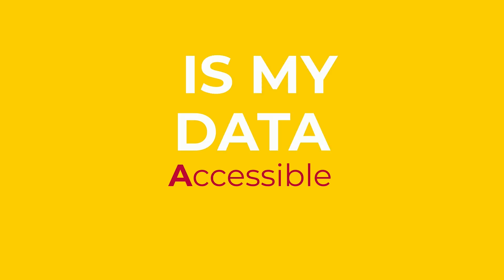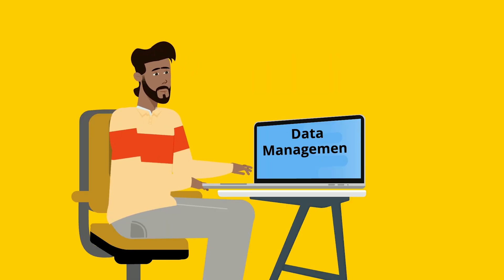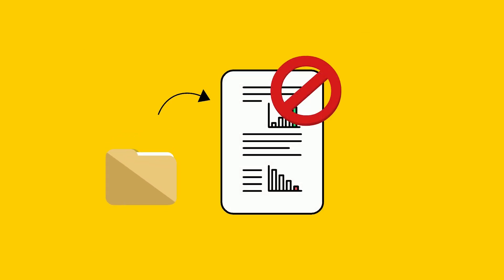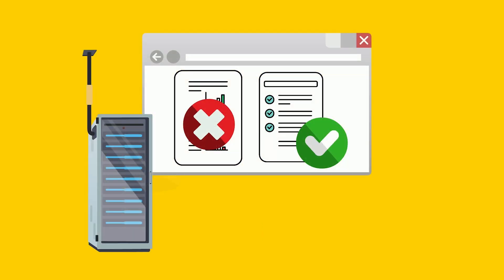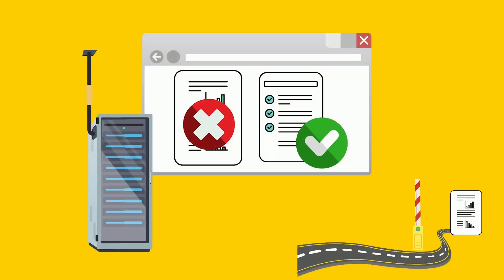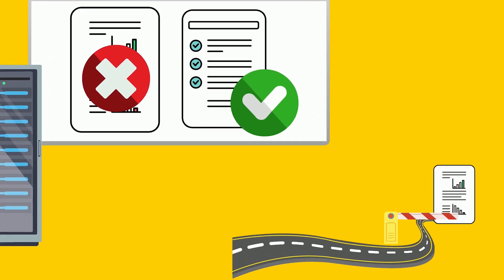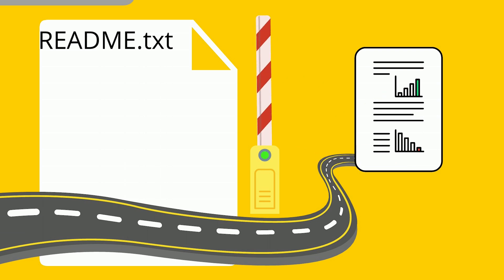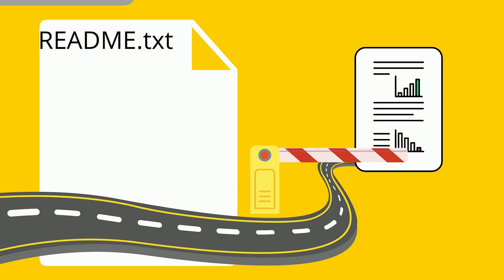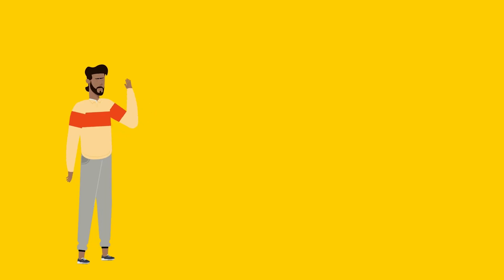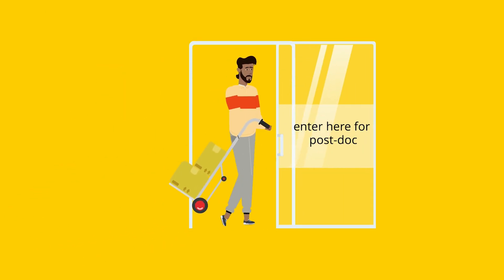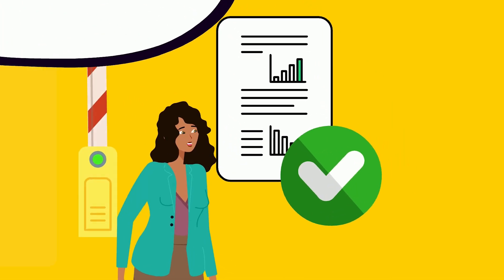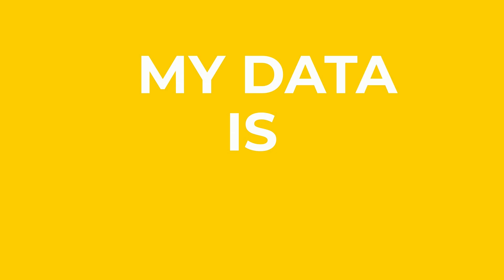Is my data accessible? As written in his data management plan, Leo published his data in a data repository. Even if the data is sensitive or personal, Leo still shares the metadata. The metadata describes how you get access to the dataset. If this metadata is not sufficient, he also includes a readme file or protocol that explains how to access the actual dataset. This way, even if Leo moves or dies, everyone who knows the protocol can still access the data. My data is accessible.